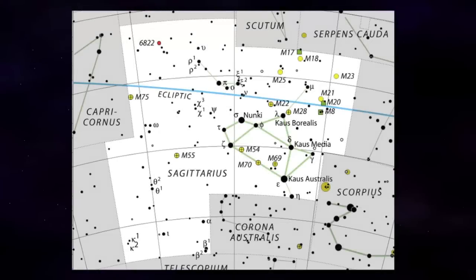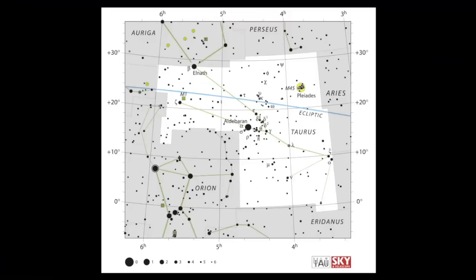Here's another version of a star map and you can see this blue line right here — this is the ecliptic. The sun passes through this constellation at some point during the year. On the maps from the International Astronomical Union, you can see the ecliptic passing through Taurus.